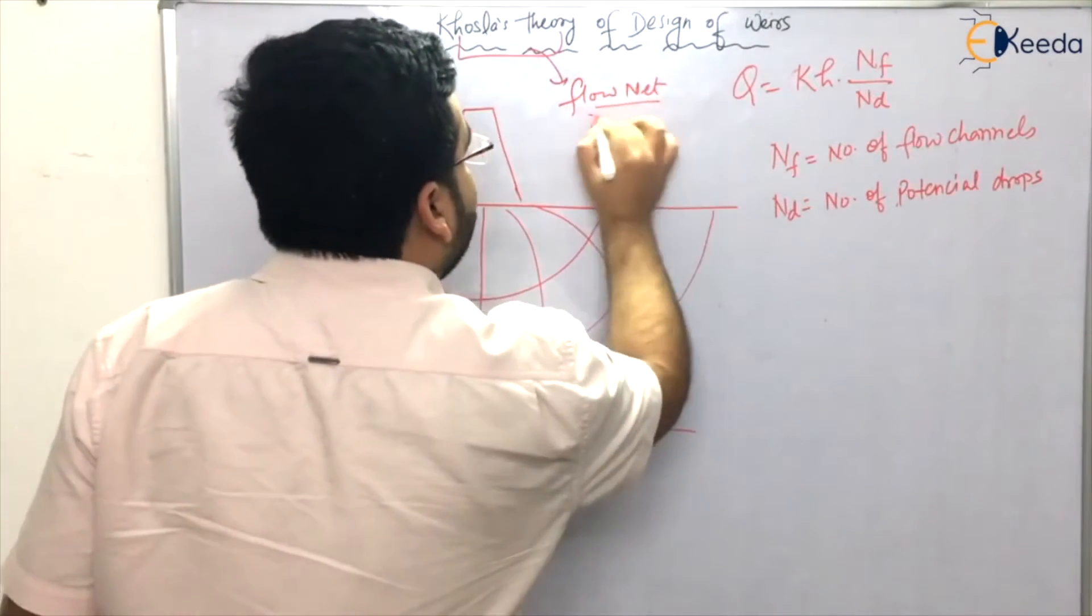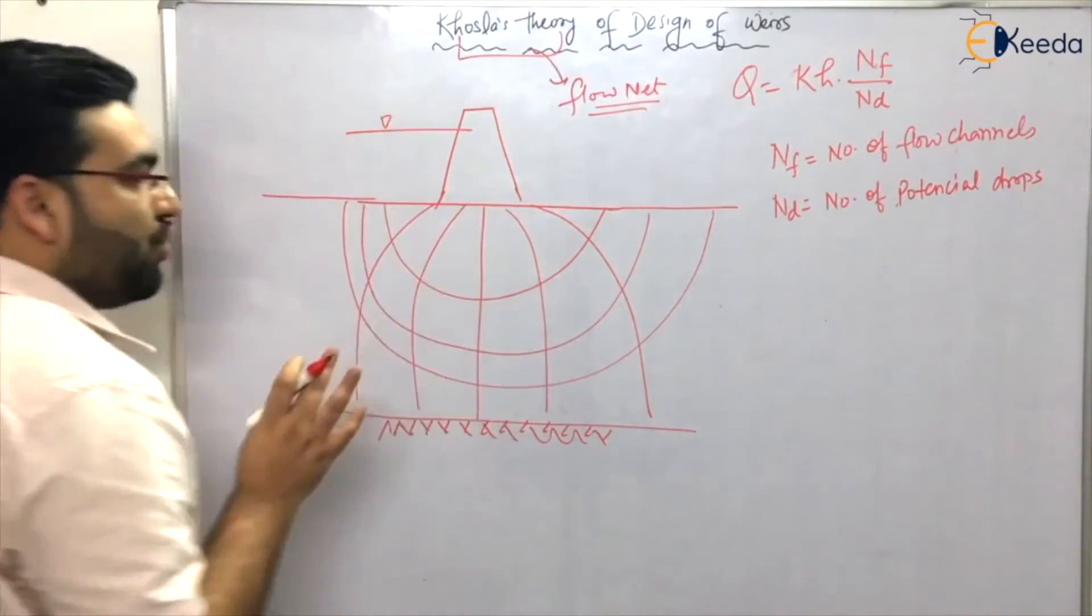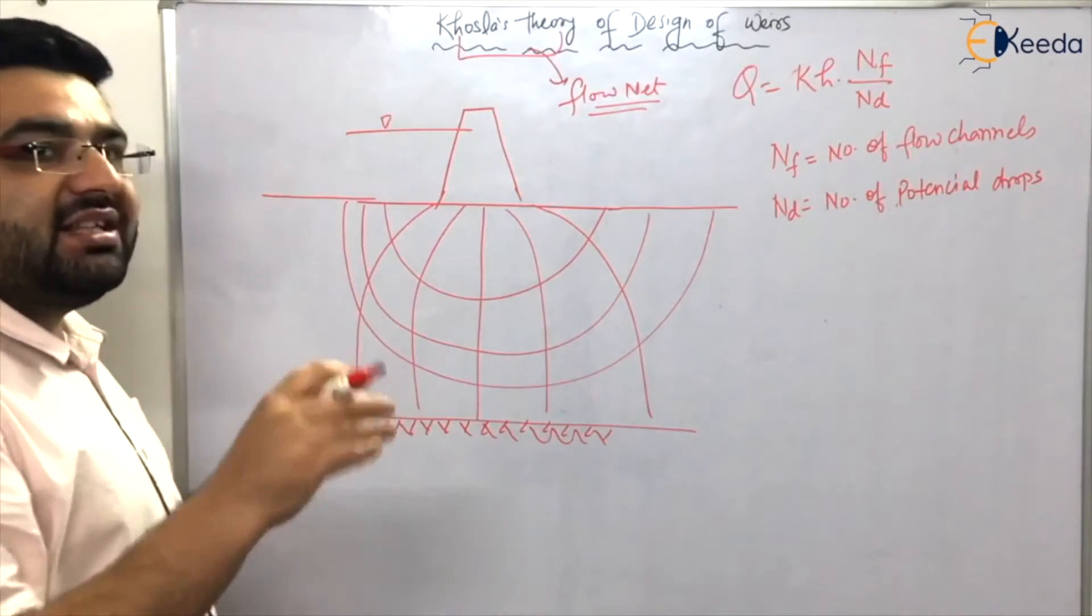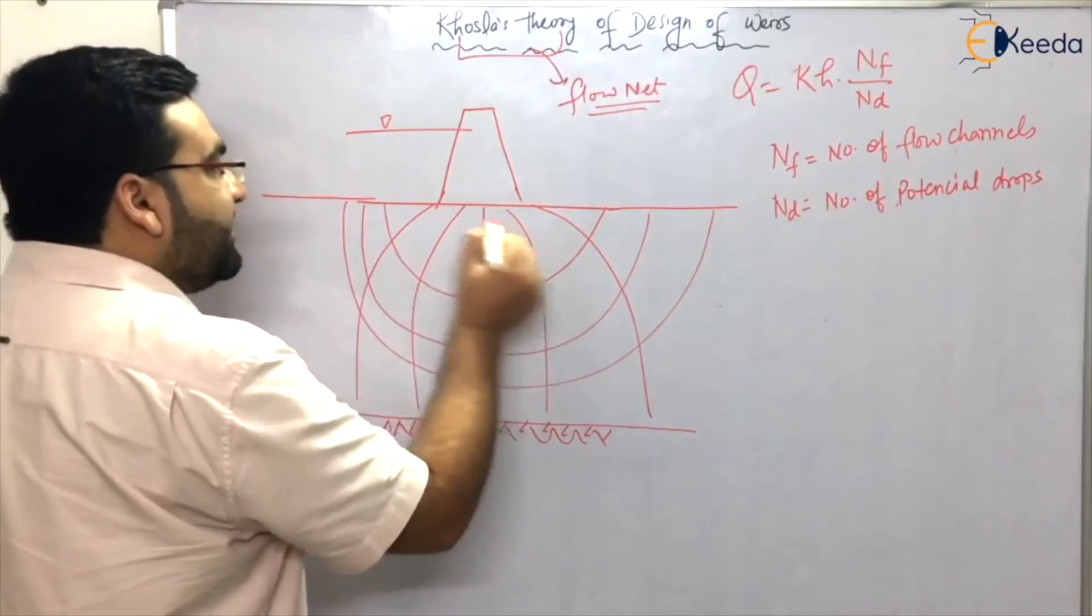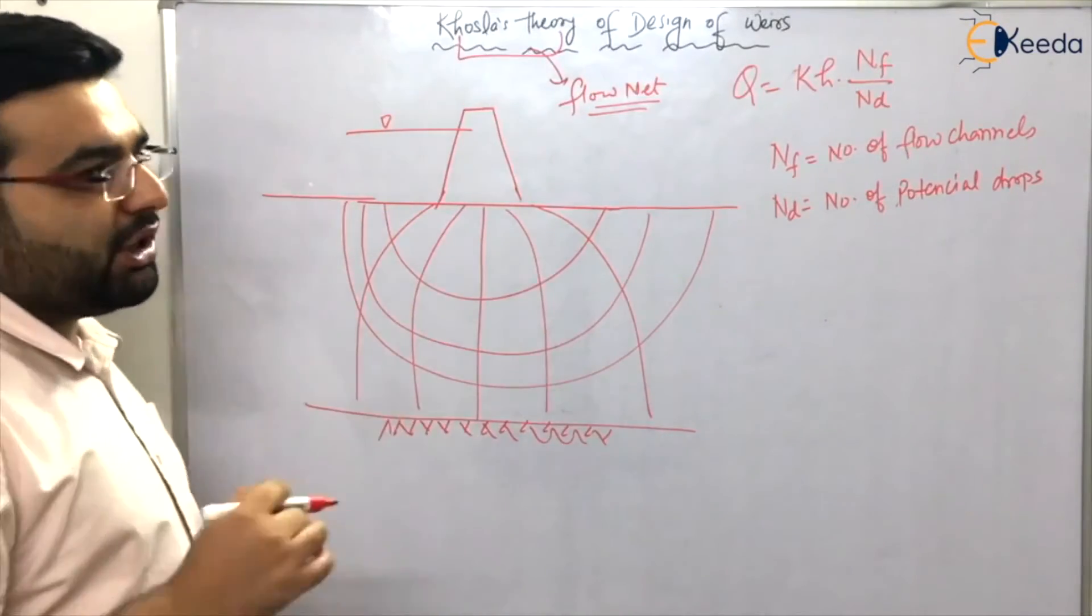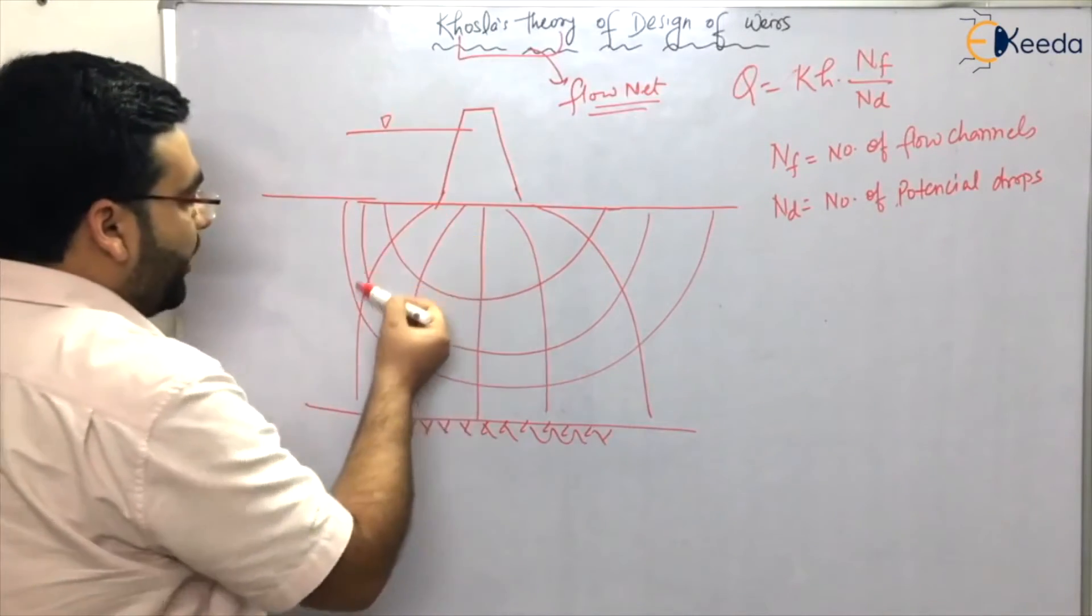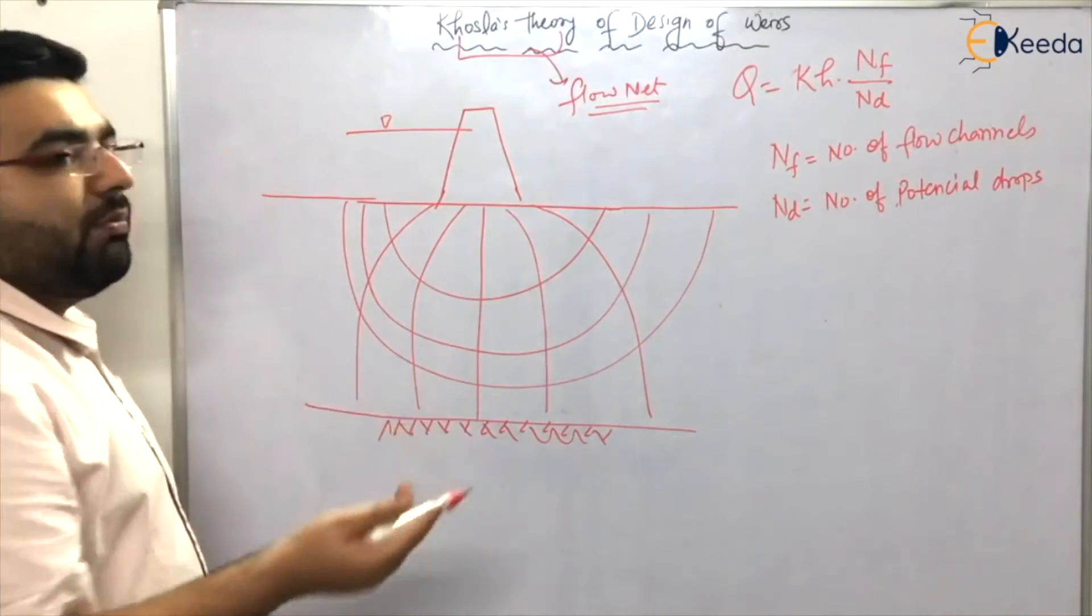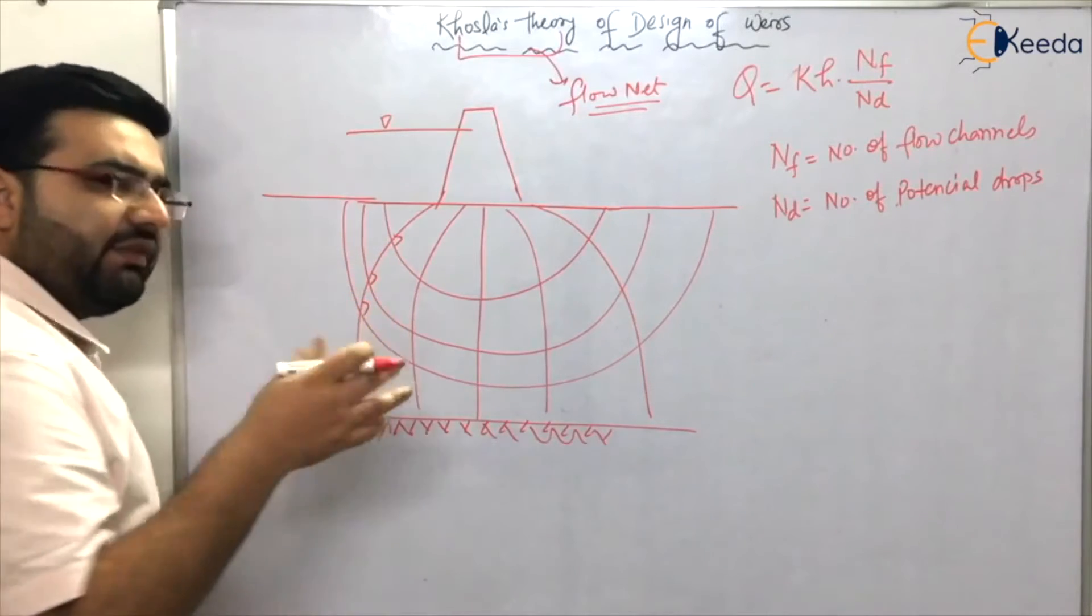Flow net is the exact net-type structure below any hydraulic structure, which is made up of streamlines and equipotential lines. Streamlines give you the path of water traveling beneath a structure. Equipotential lines are lines joining points of equal head. These lines intersect at an angle of 90 degrees - these are all soil mechanics concepts.